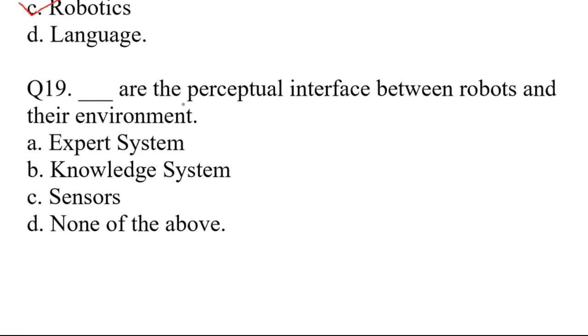Question number 19. Dash are the perceptual interface between robots and their environment. A. Expert system, B. Knowledge system, C. Sensors, D. None of the above. Right answer is option C. Sensors.